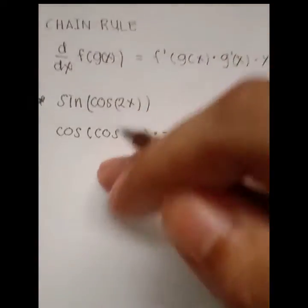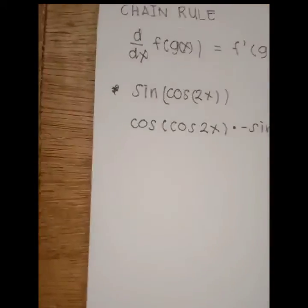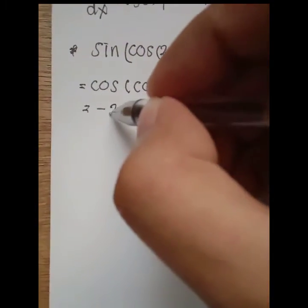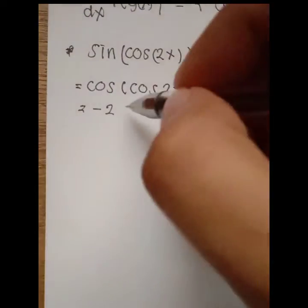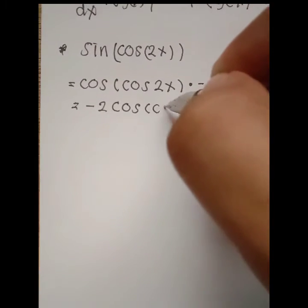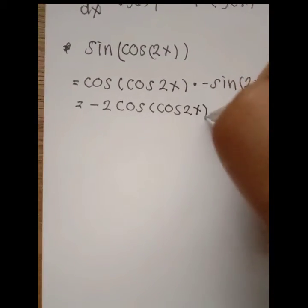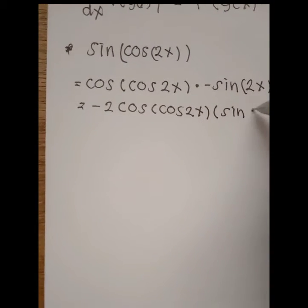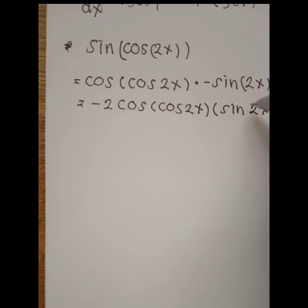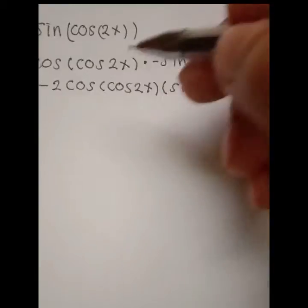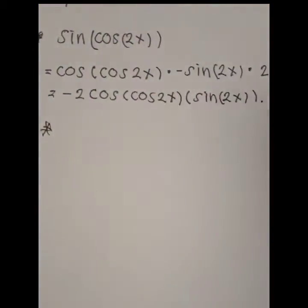Simplifying the equation, the derivative of 2x is 2, and we get the final answer of negative 2 cosine(2x) times sine(2x).